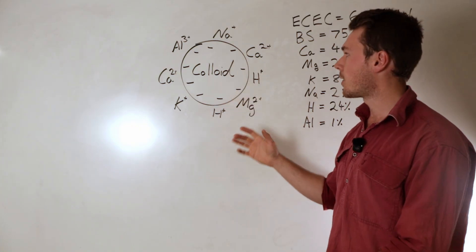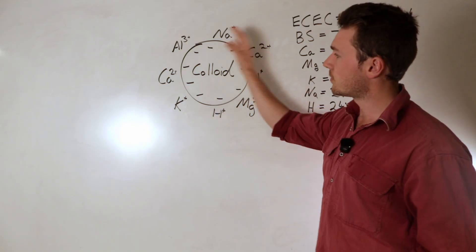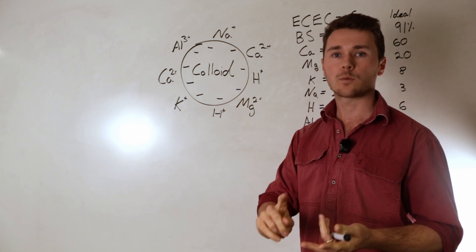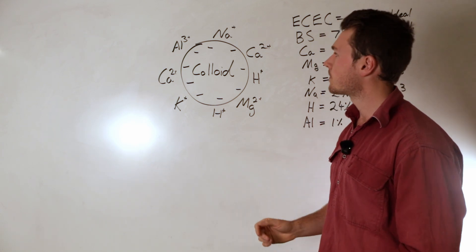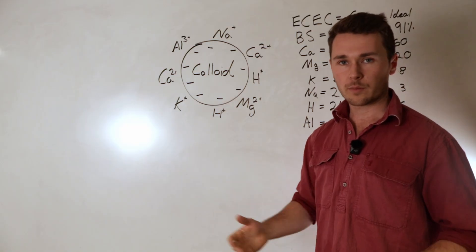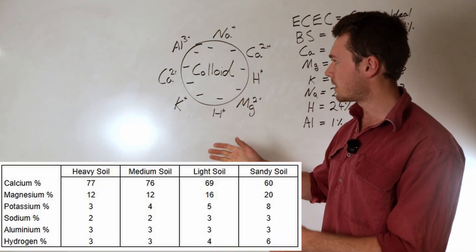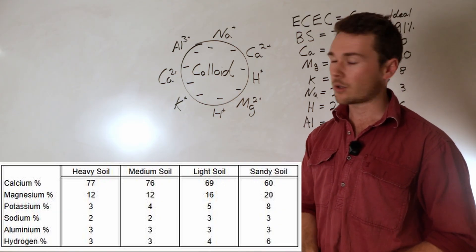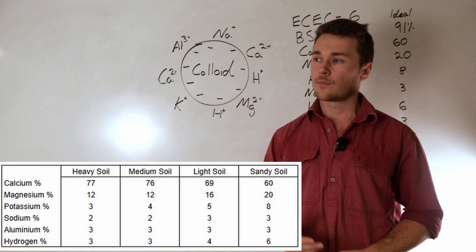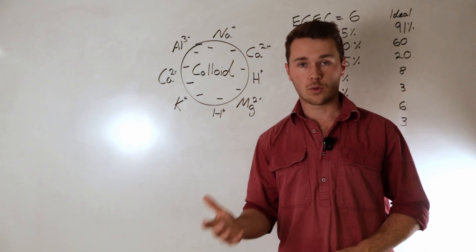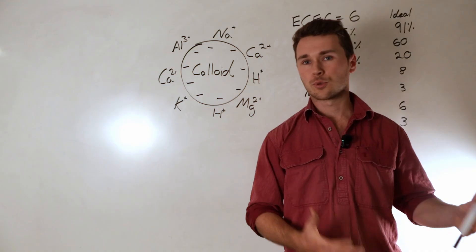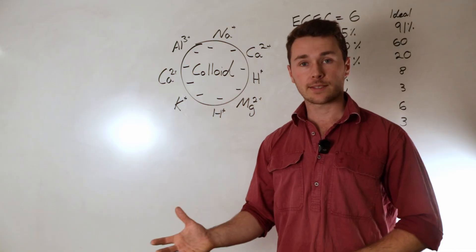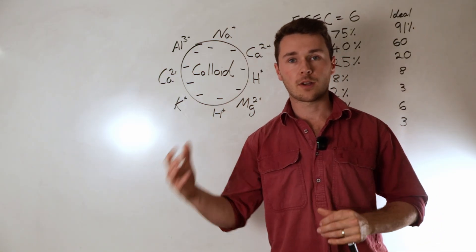Albrecht and a lot of other researchers at that time thought that there's an ideal ratio of these cations on the clay particle for soil health as well as plant health and production. So that is effectively the Albrecht method, and you can see here in this table the ideal ratio or percent of these cations on the clay colloid. It's a very interesting idea, the Albrecht method. The big problem with the Albrecht method is that it's not quite scientifically proven.